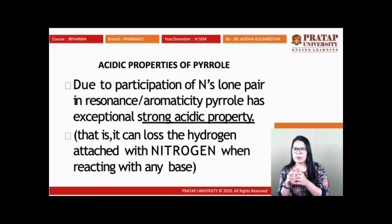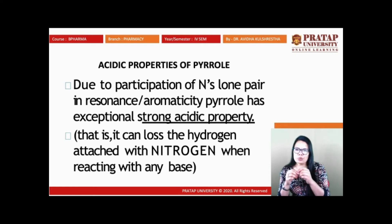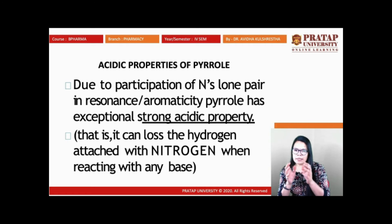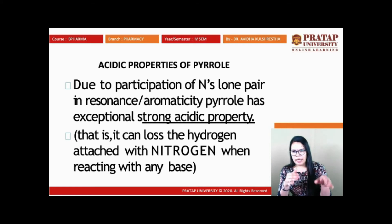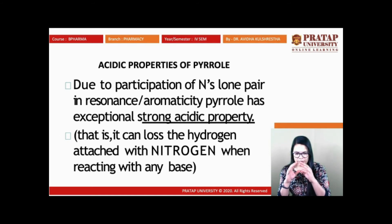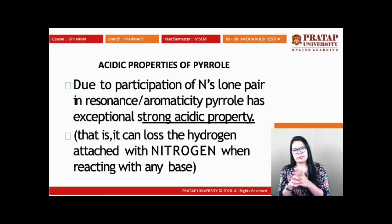Regarding the acidic properties of pyrrole: due to the participation of the nitrogen lone pair in resonance and aromaticity, pyrrole has exceptionally strong acidic properties. The nitrogen has two lone pairs of electrons; these are responsible for the resonating structure as well as the aromaticity of pyrrole. This creates a strong acidic property — pyrrole can lose the hydrogen attached to nitrogen when reacting with a base. The strong acidic property is due to the lone pair on nitrogen completing the six pi electrons required for aromaticity as per Hückel's rule.